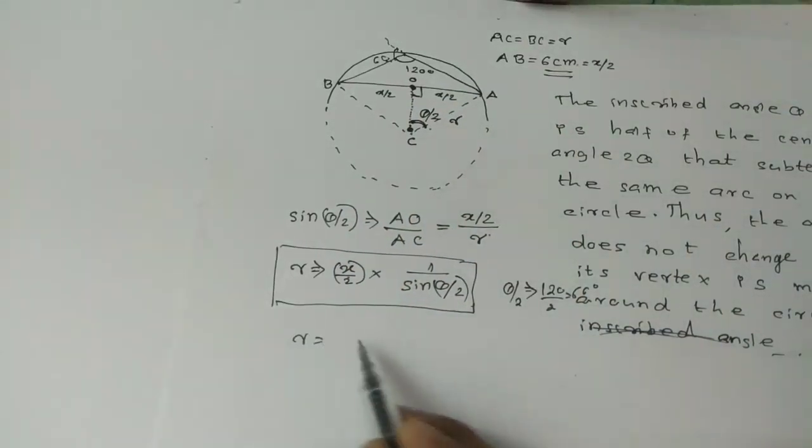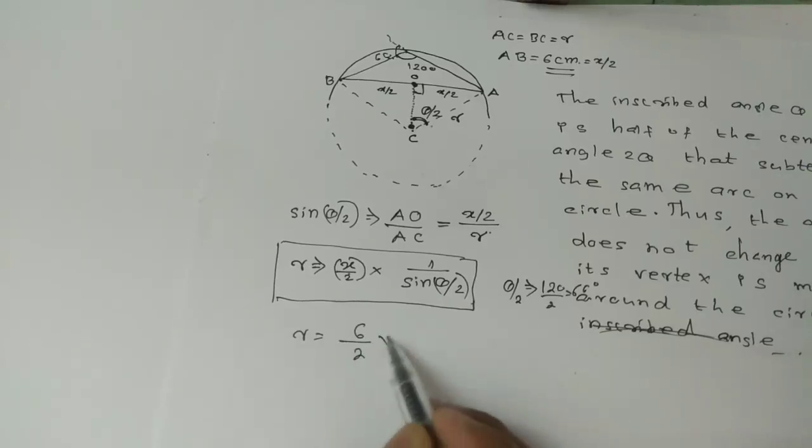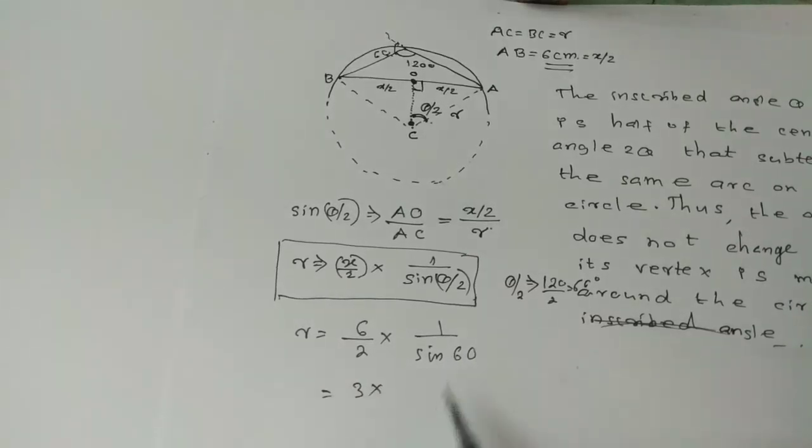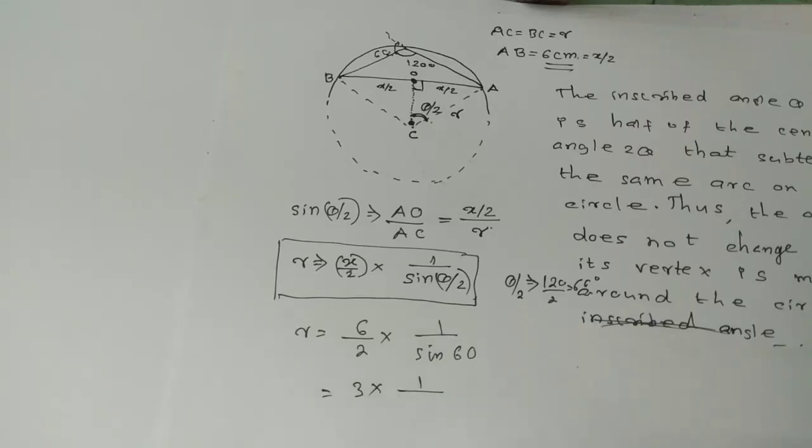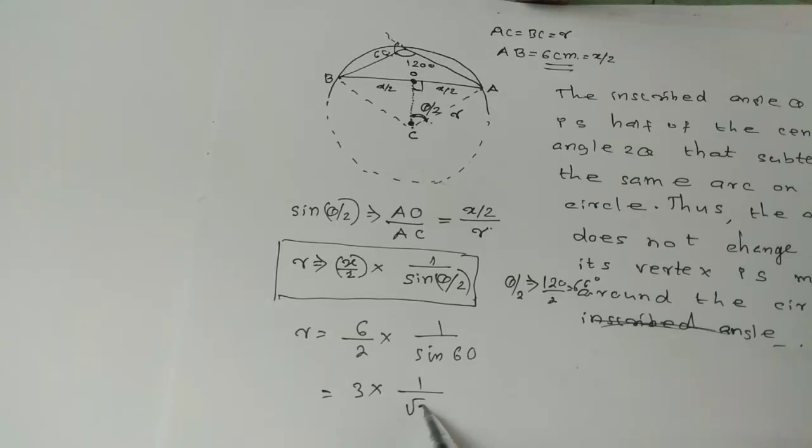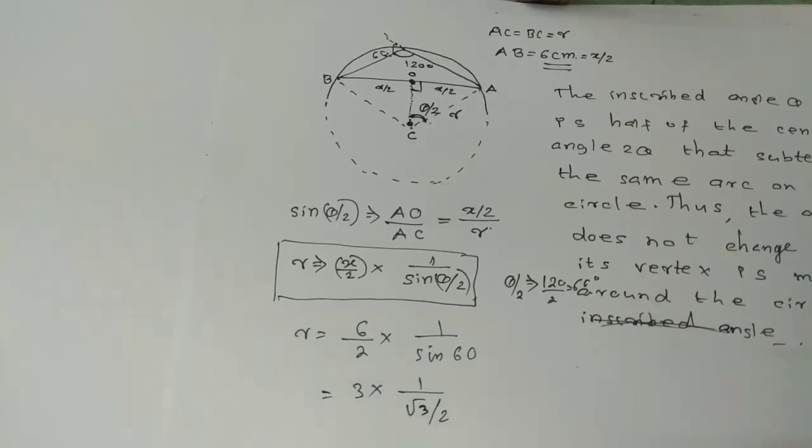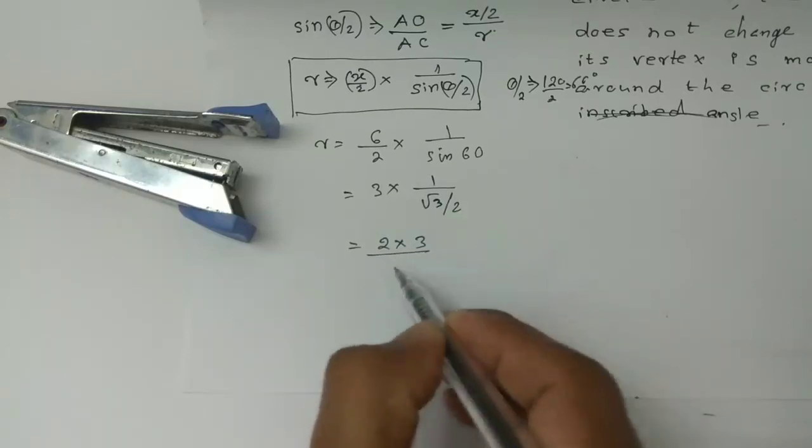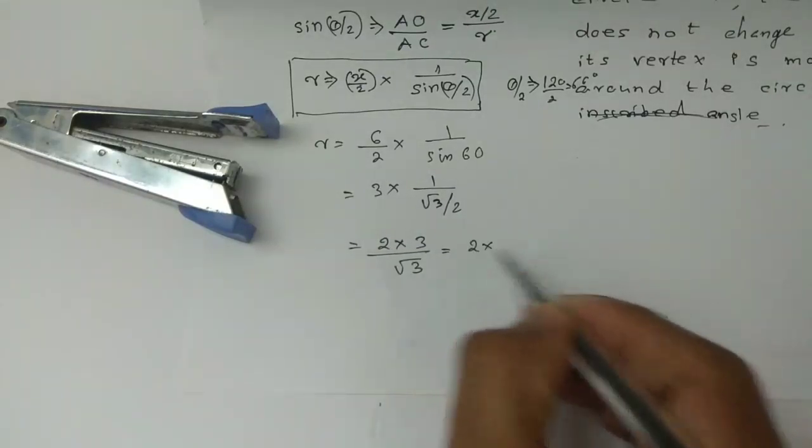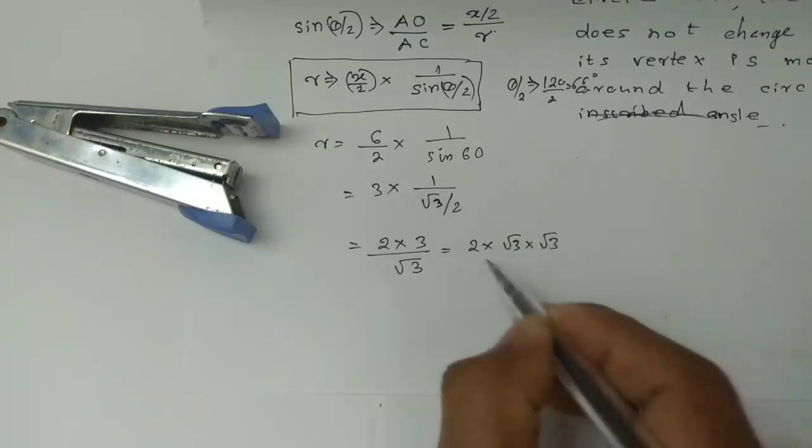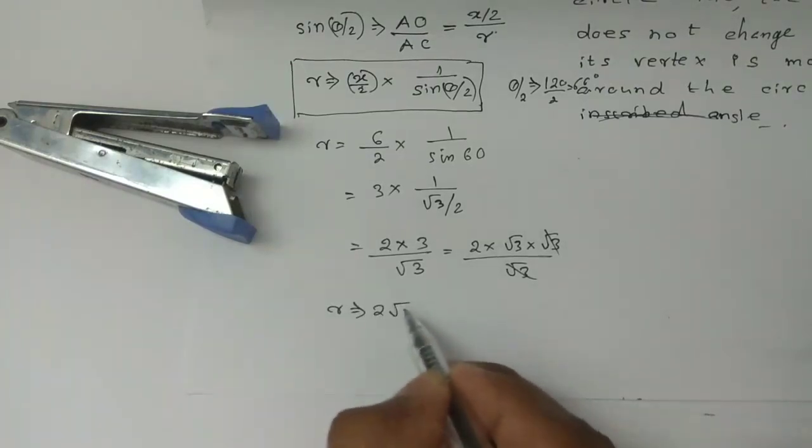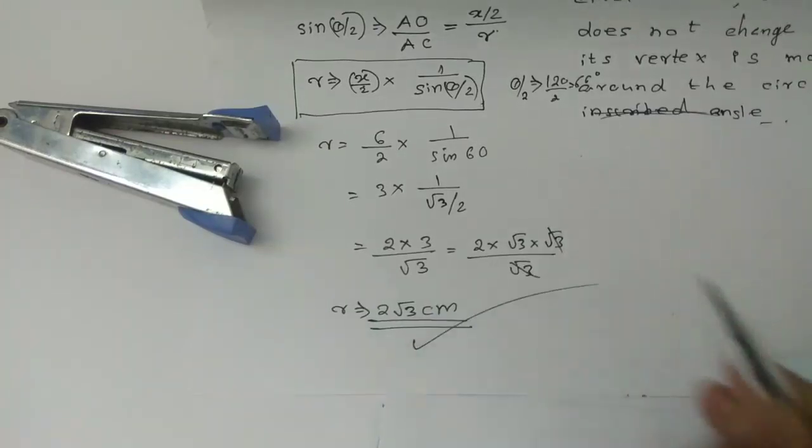This is 60 degrees. So sine 60 equals root 3 by 2. Root 3 by 2. So r equals 6 divided by 2 into 1 divided by sine 60. That's 3 divided by root 3 by 2. So 2 into 3 divided by root 3, which is 2 into root 3. Rationalizing: 2 root 3 into root 3 divided by root 3 equals 2 root 3. So r equals 2 root 3 cm.